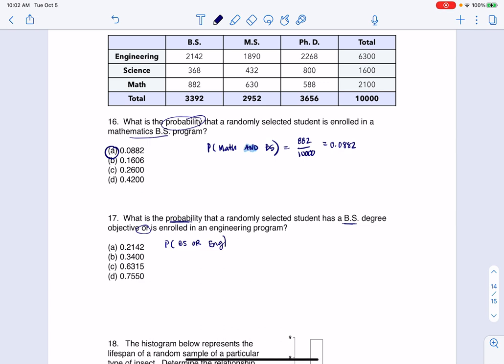We have a formula for this - the or formula or the addition rule. It's formula one. So we've got the probability that somebody gets a bachelor's plus the probability that someone gets an engineering degree minus any overlap in case we counted them twice.